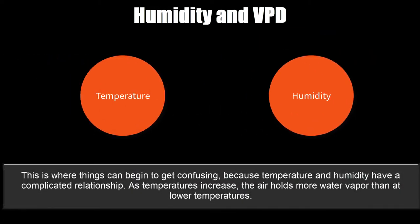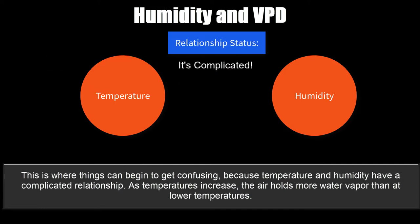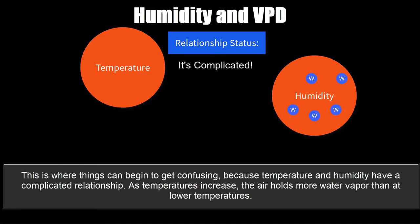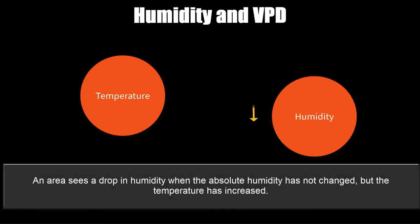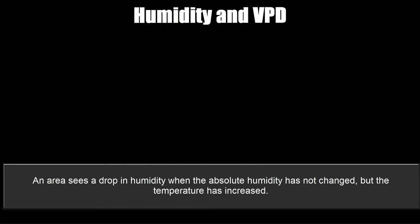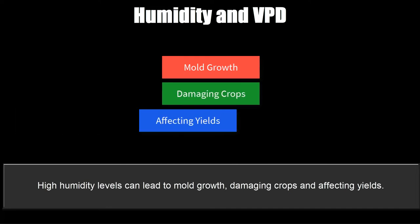This is where things get confusing because temperature and humidity have a complicated relationship. As temperatures increase, the air holds more water vapor than at lower temperatures. An area sees a drop in RH when the absolute humidity has not changed but the temperature has increased. High humidity levels can lead to mold growth, damaging crops, and affecting yields.